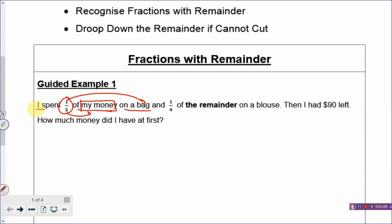And I spend one-quarter of the remainder. The second fraction refers to the remainder. The remainder has four boxes, and you took out one box and spent it on the blouse. So, this fraction refers to part of a group as well. But are the two fractions referring to the same group? No — the first fraction refers to my money, and the second fraction refers to the remainder. So, you cannot make the denominator the same.